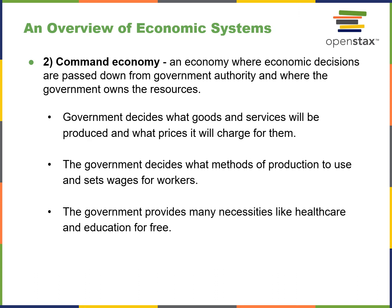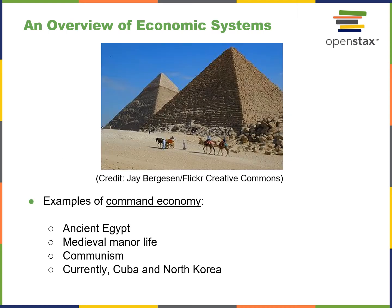The command economy is basically the government dictating all the rules and regulations and the rules of engagement for how consumers and producers interact. The government decides what goods and services will be provided, how they're produced, and sets wages for workers. The government also provides things like health care and education for free. Examples include ancient Egypt, medieval feudalism, and communism. Today this is exhibited most clearly in North Korea and Cuba.